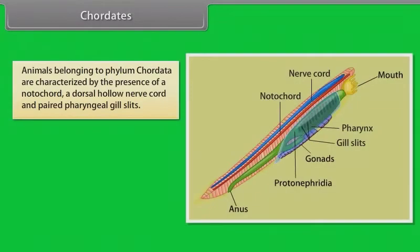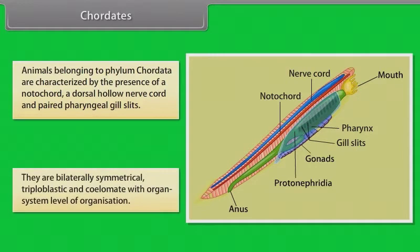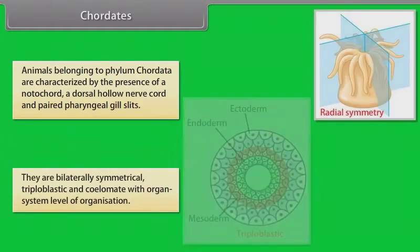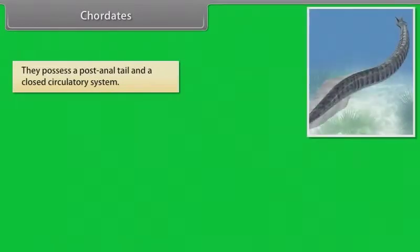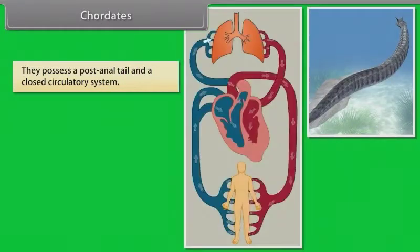Animals belonging to phylum Chordata are characterized by the presence of notochord, a dorsal hollow nerve cord and paired pharyngeal gill slits. They are bilaterally symmetrical, triploblastic and coelomate with organ system level of organization. They possess a post-anal tail and a closed circulatory system.